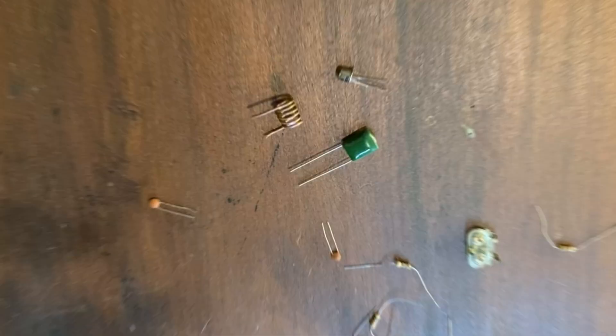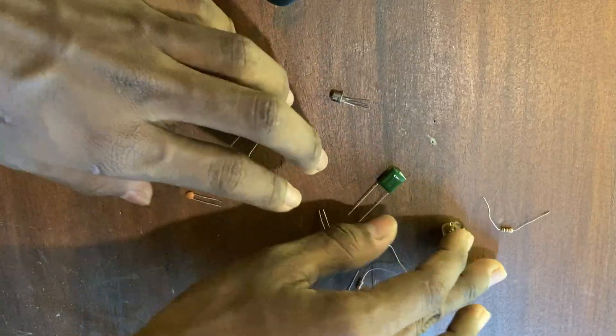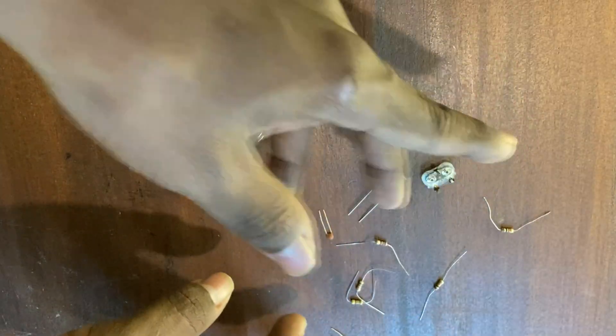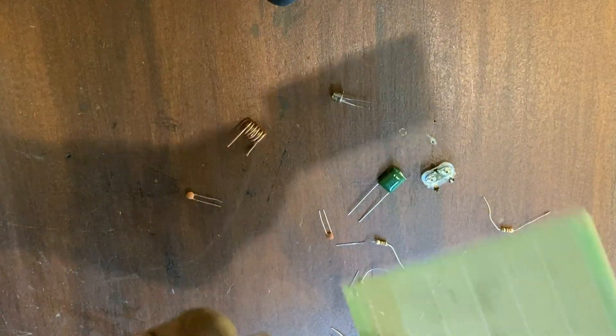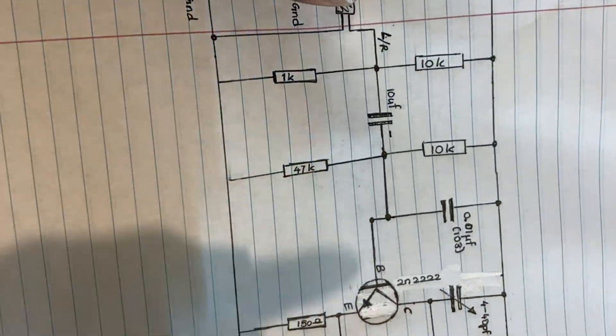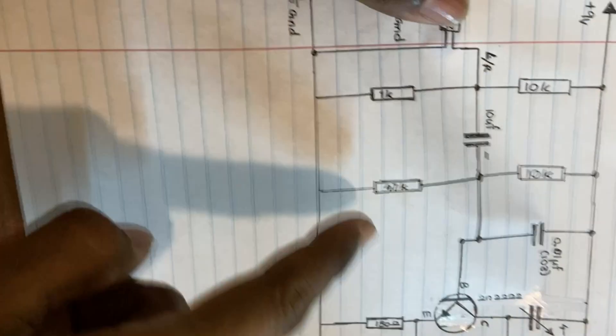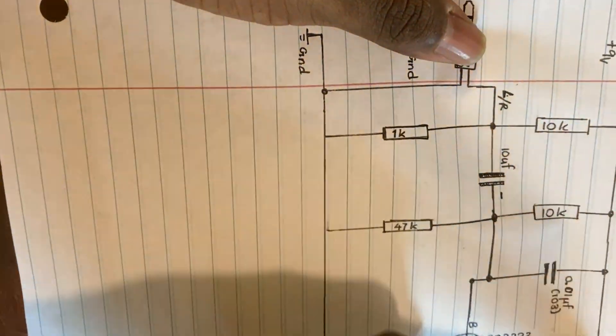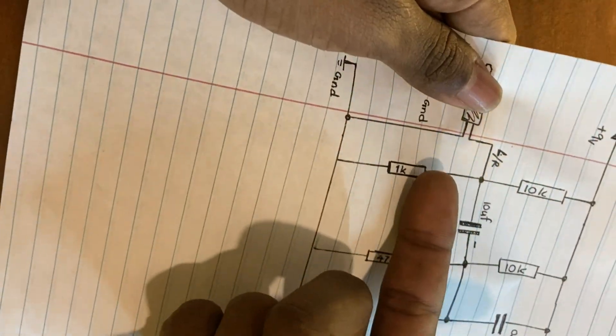These are all the components that you will need and I'm going to assemble it on a prototyping board. First you will have to make these ground and supply lines and you can connect the components to these rails.